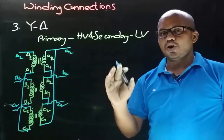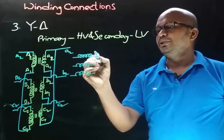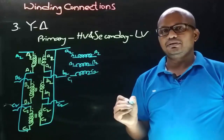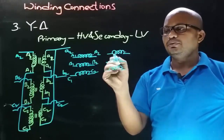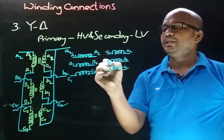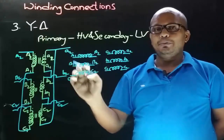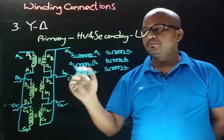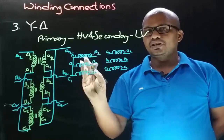Now let's arrange these windings in horizontal fashion. Let this be the HV winding with dot ends A2, B2, C2 and non-dot ends A1, B1, C1. Consider the LV winding with dot end terminals small a2, small b2, small c2, and the other ends a1, b1, c1. On the primary side we have star connection, obtained by joining the non-dot end terminals and taking connections from dot end terminals. We obtain the star connection on the primary side.